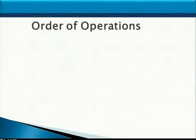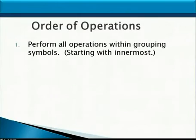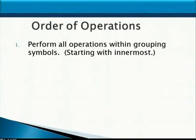Now recall that the order of operations says that we first perform all operations within grouping symbols, starting with the innermost. That includes parentheses and brackets, any operations above or below a fraction bar, any operations within absolute value symbols, and any operations underneath a radical sign.